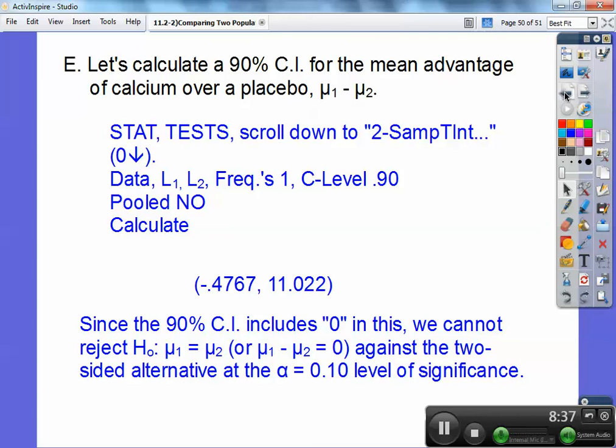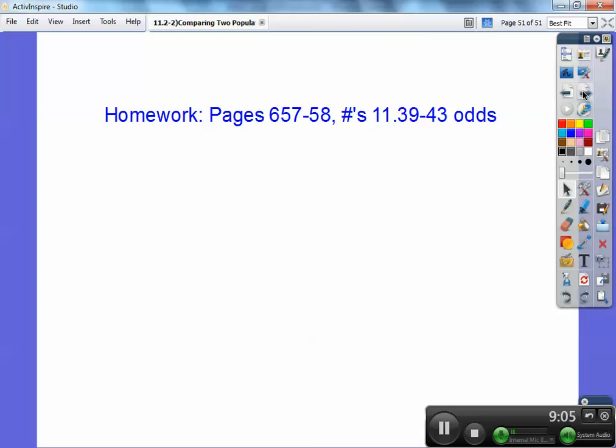Since 90% of the confidence interval includes zero right there, we cannot reject the null hypothesis against the two-sided alternative hypothesis at the 10% significance level because 90% does include that right there. If it wasn't inside of there, then we can say that it would be significant enough. But since it is in my 90% confidence interval, I can't reject that, guys. And then there's your homework.